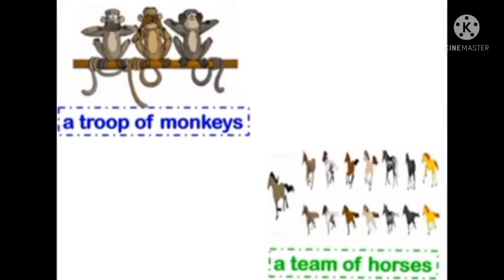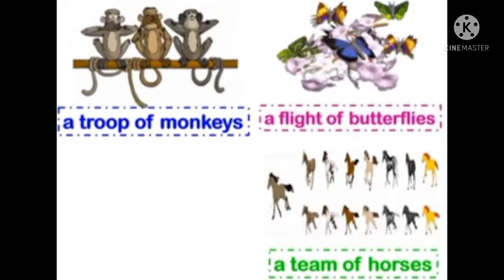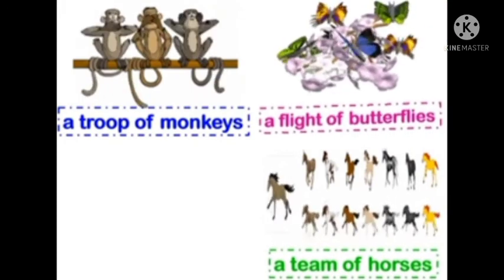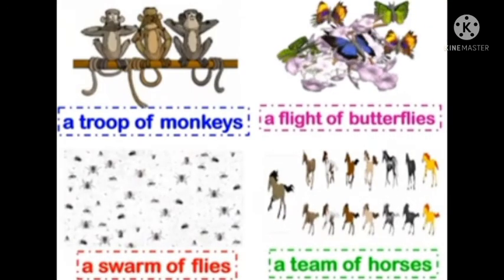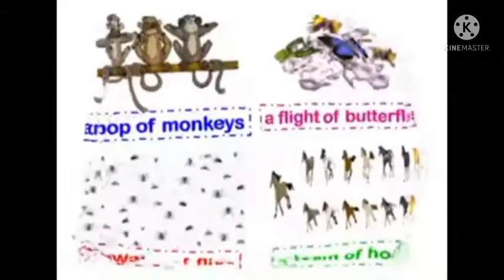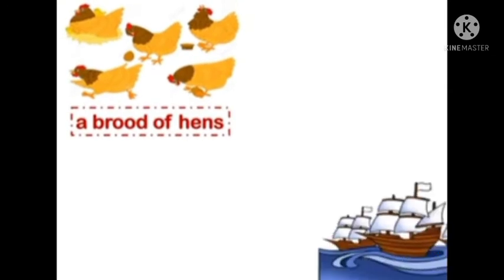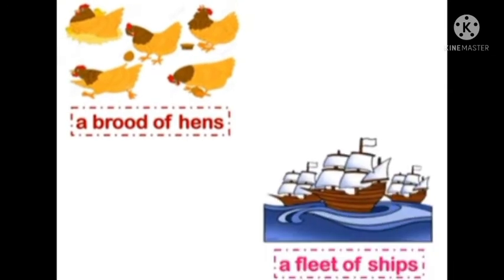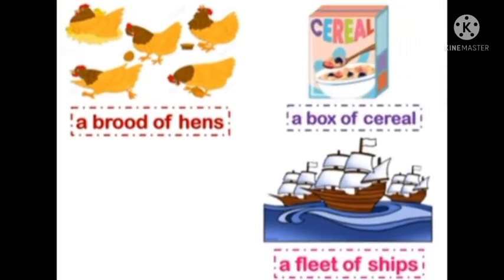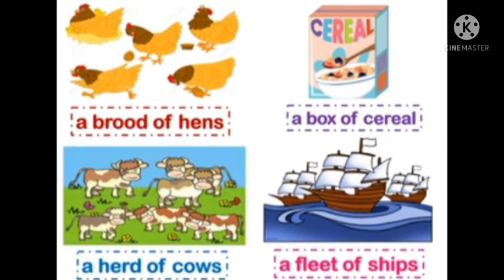Now we have to check more examples of collective nouns: a troop of monkeys, a team of horses, a flight of butterflies, a swarm of flies, a brood of hens, a fleet of ships, a box of cereal, a herd of cows.